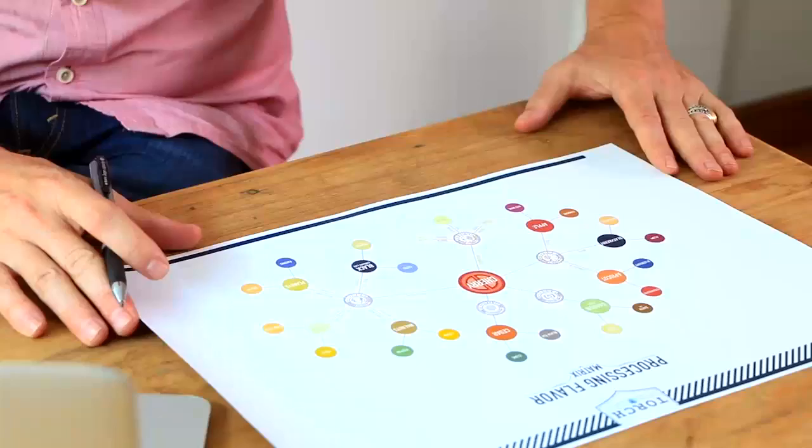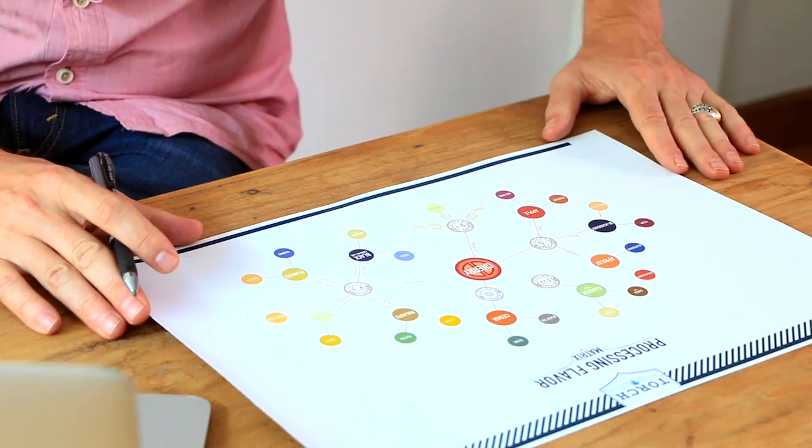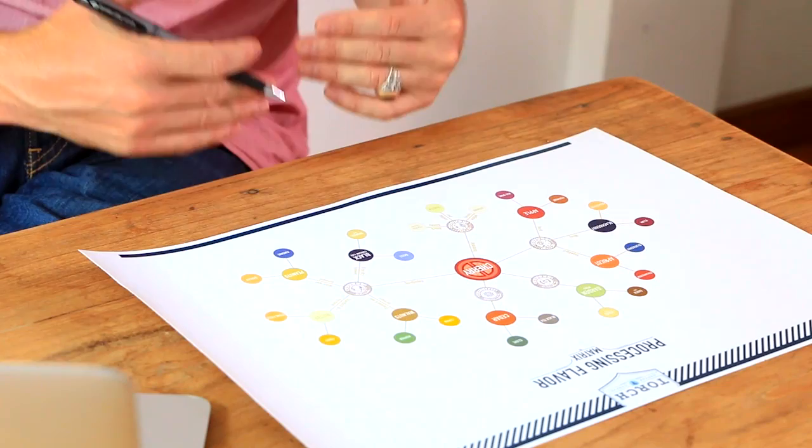The question is, now you understand it, how are you going to use this? Every different farm could potentially have a different processing method that creates the best coffee for that farm. For example, we did a processing workshop in Puer, China, and we found that the natural process by far was the best process for that region.